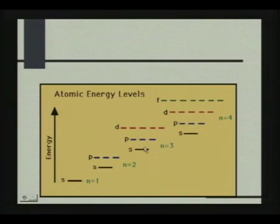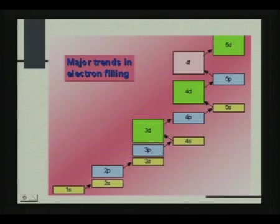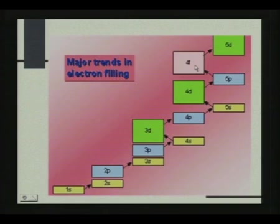For N equal to 3, L takes values 0, 1, and 2. For N equal to 4, L takes values 0, 1, 2, and 3. Now I will repeat the trends in electron filling: 1S, 2S, 2P, 3S, 3P. After 3P, instead of the 3D level being filled up, it goes to the 4S level, because 4S is nearer to the nucleus and 3D is further away. After 4P, instead of going to 4D, it goes to 5S and then to 4D. Remember also the N plus L rule.